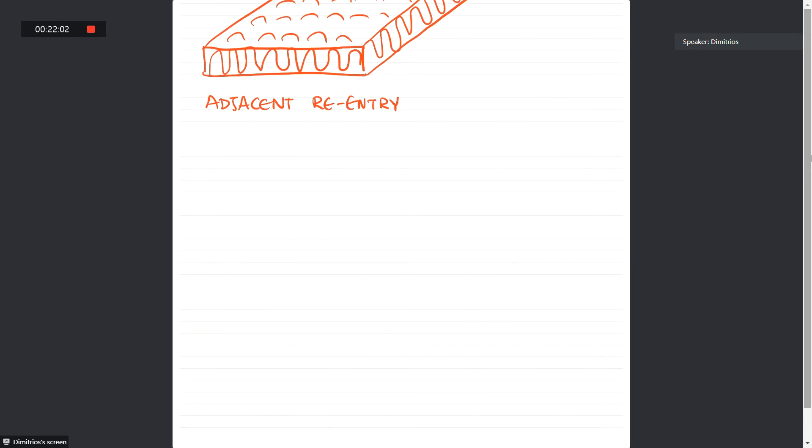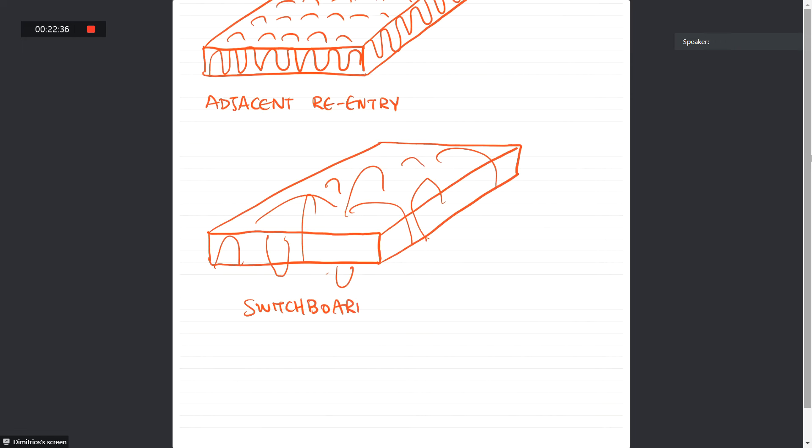And we have the non-adjacent re-entry or switchboard model. So the switchboard model, we can have some chains that look okay, but also we have chains that are completely going in and out in random positions. So this is the switchboard.